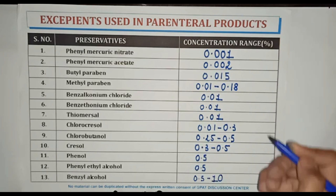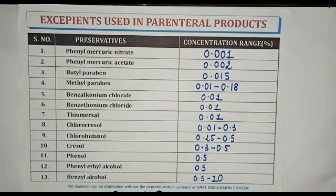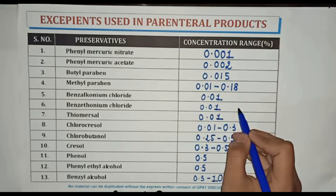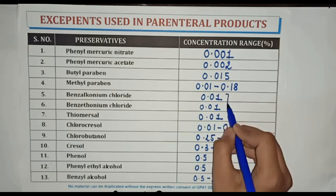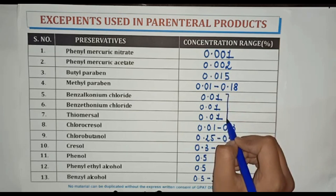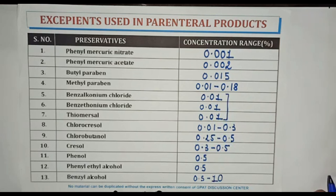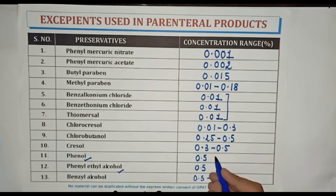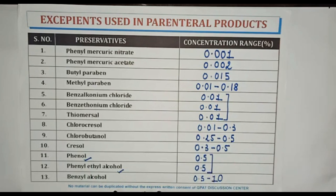From this concentration range, we can figure out that the concentration of benzalkonium chloride, benzethonium chloride, and thiomersal is the same. And the concentration of phenol and phenylethyl alcohol is also the same.